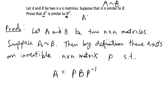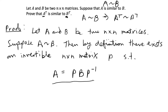We want to prove that if this is true, then it implies that A transpose is similar to B transpose. To prove this, I'm basically going to take the transpose of this equation and then simplify it into a form where we can get it back into the similarity formula. If we can do that, then we have proven that A transpose is similar to B transpose as well.